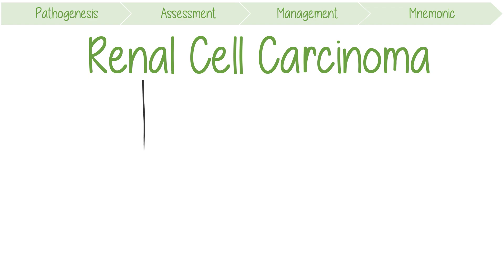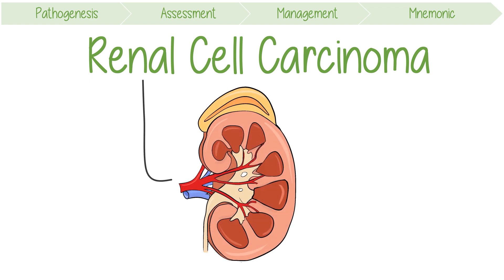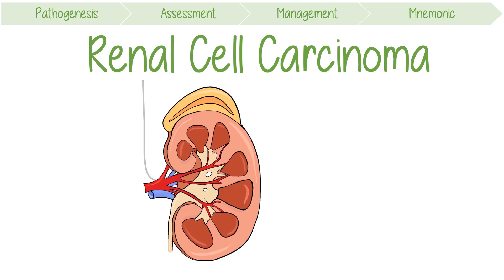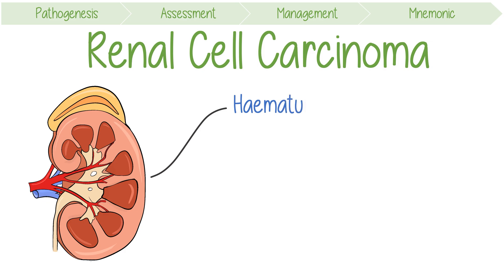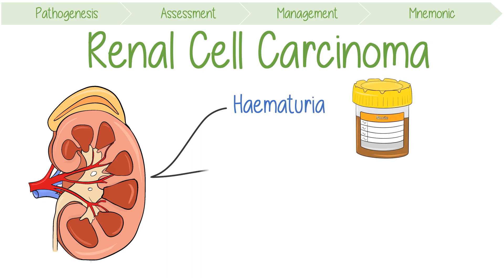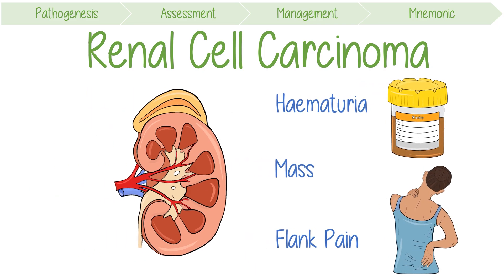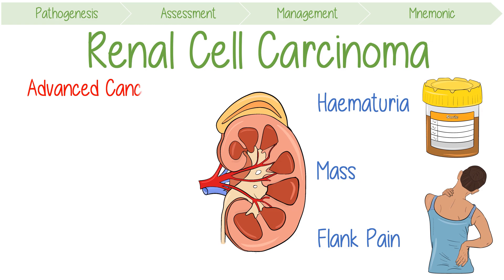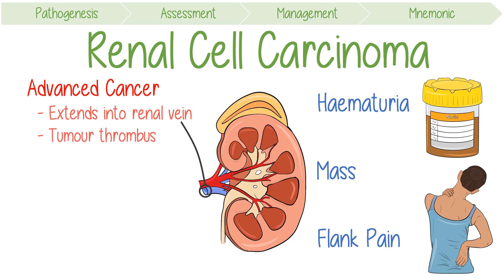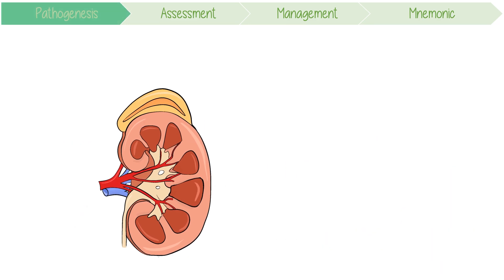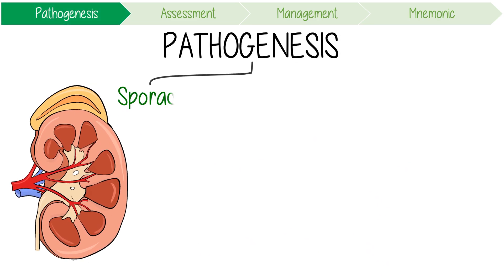Renal cell carcinoma is the most common malignancy of the kidneys. The classic presentation is with the triad of haematuria or blood in the urine, a palpable mass, and flank pain. Advanced cancer characteristically extends into the lumen of the renal vein and into the inferior vena cava. This is known as tumor thrombus, which may cause a variety of strange symptoms including a varicocele.